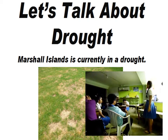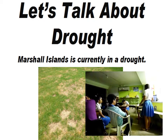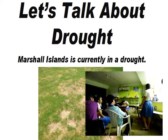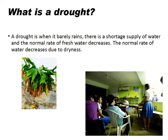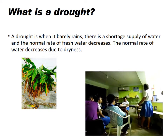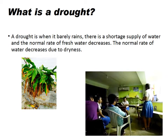Okay, everyone, let's talk about drought. Why are we talking about drought? Because the Marshall Islands is currently in a drought. What is a drought? A drought is when there is no water, when we have low rates of rainfall, and when we can't depend on rain anymore.